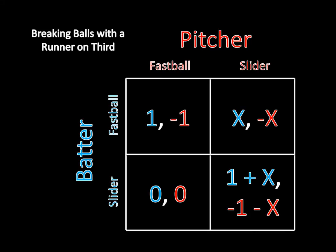To solve this game, let's first assume X is greater than one. Then fastball will strictly dominate slider for the pitcher — negative one is greater than negative X, and zero is greater than negative one minus X. So the pitcher always throws fastballs and the batter always guesses fastball. This means the pitcher is extremely wild or the catcher is incompetent. Substantively, this isn't a very interesting case, especially at the major league level.